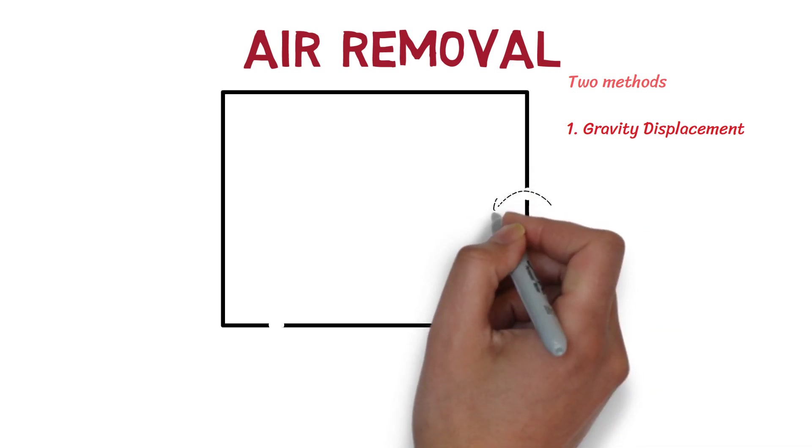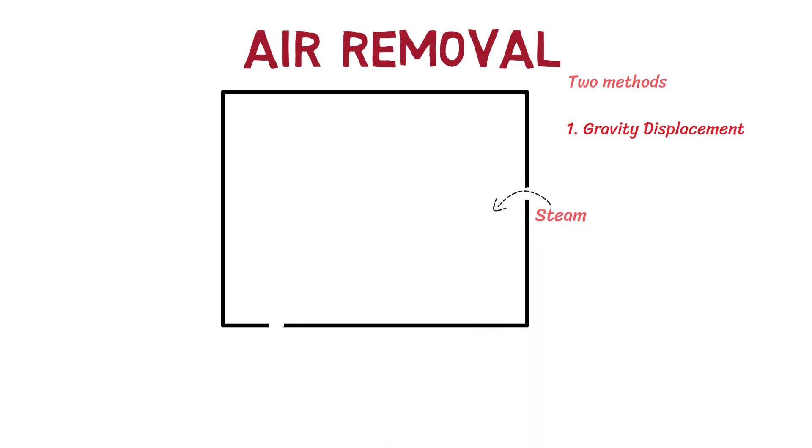In this method, steam is introduced into the chamber and the cold air is forced out through a drain at the bottom of the autoclave. This process continues until all the air gets out of the chamber and is filled with steam. This is a simple and widely used method.